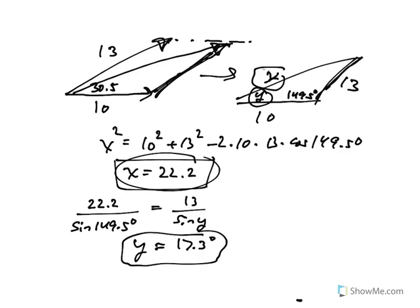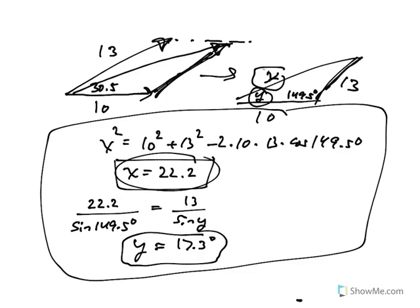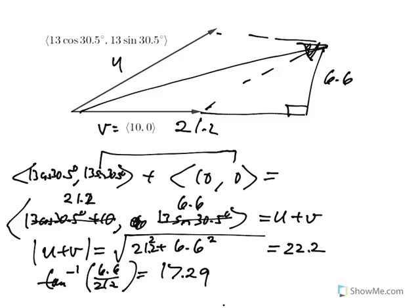So notice with the law of cosines and law of sines, it was pretty involved. It would take a while to do it this way. But if I do it with component form, it's a little bit faster.